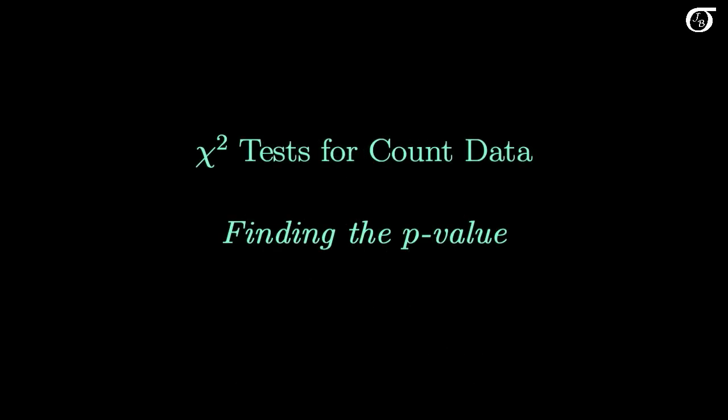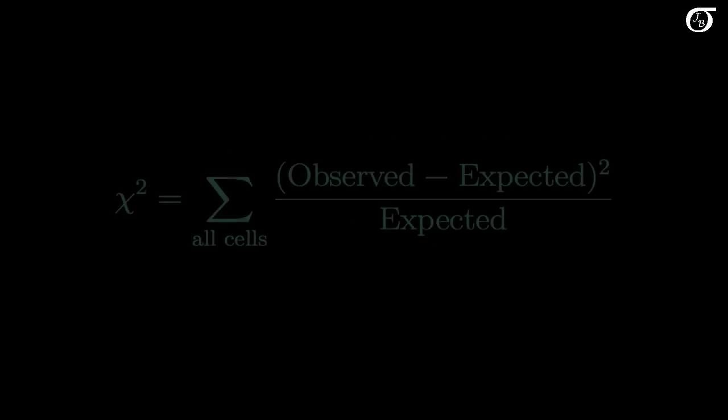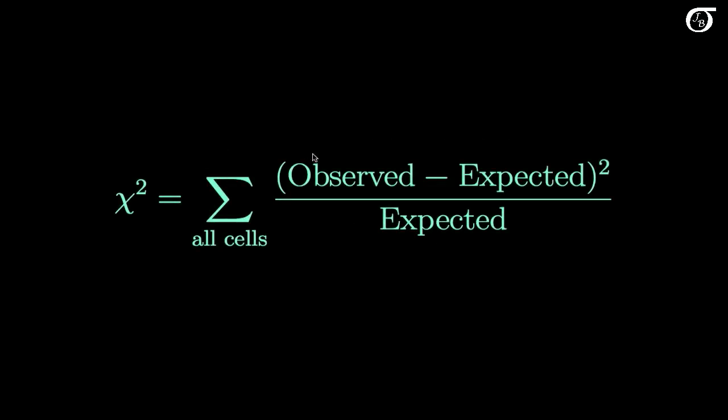Let's take a look at finding the p-value in chi-square tests for count data. Here we have our usual chi-square test statistic: the sum of the observed minus the expected squared over the expected. Add that up over all cells, you've got your chi-square test statistic.